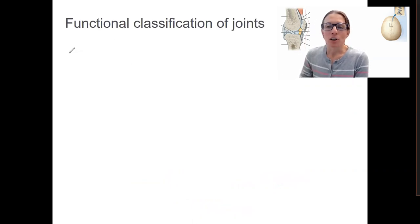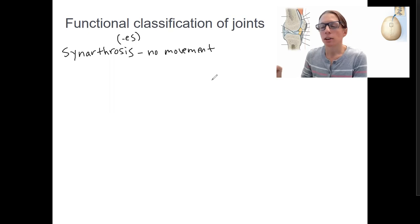So first of all, there are the ones that have no movement. These are called synarthrosis. Synarthrosis for singular. These have no movement. These are immobile or nearly immobile joints.